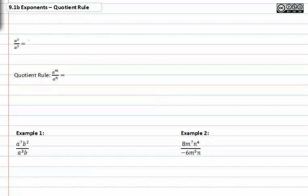When you have a to the fifth divided by a to the third, notice that the bases match. This is the same as multiplying a to itself five times, all divided by a multiplied to itself three times.